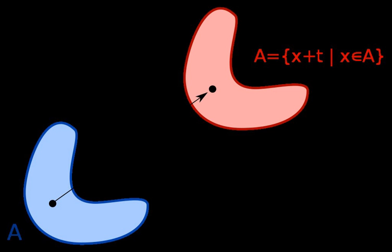Translational symmetry of an object means that a particular translation does not change the object. For a given object, the translations for which this applies form a group, the symmetry group of the object, or if the object has more kinds of symmetry, a subgroup of the symmetry group.